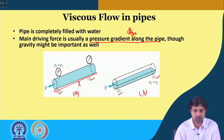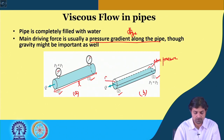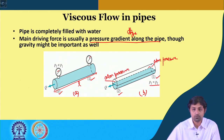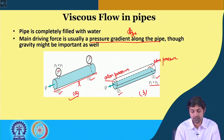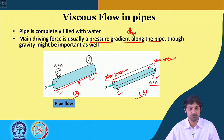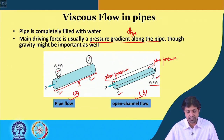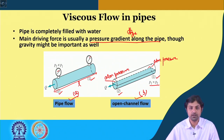In the second case, the pipe is not completely filled with water. If it is open, atmospheric pressure is present at both points and p1 will equal p2. So this is classified as pipe flow, whereas here there is no pressure gradient, the flow occurs with a free surface — that means it is open channel flow, which is exposed to atmosphere and driven mainly by gravity.